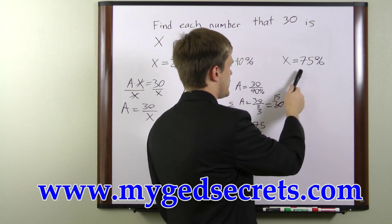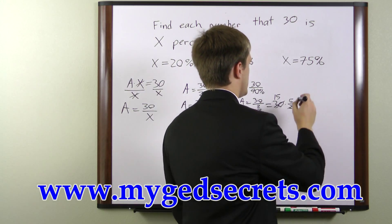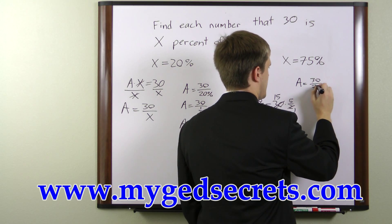In the final example, we have 75%. We can write that a equals 30 over 75%.